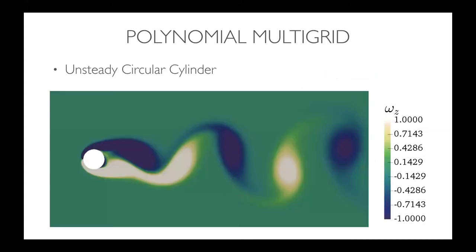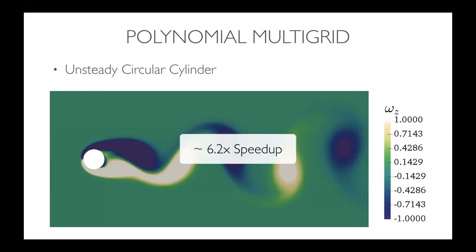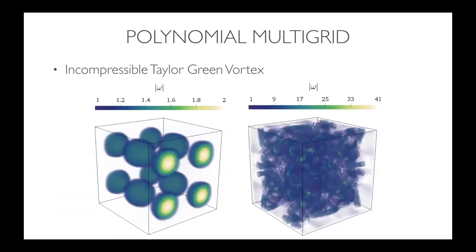For example, on an unsteady circular cylinder case, using polynomial multigrid gives speedup factors around six. Similarly, for a 3D case like the incompressible Taylor-Green vortex, we get speedup factors between three and four. So fairly significant speedup factors are achievable with polynomial multigrid.